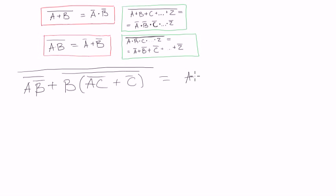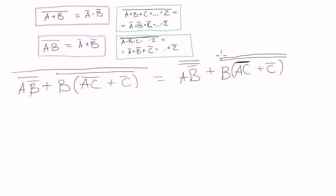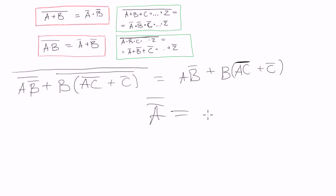We write A·B negated, and it is negated, and then we negate it again. Plus B·A negated - sorry, negated all of these two - plus C negated, all negated. This is the natural negation that was in this part, and then negate again - this negation is from De Morgan's theorem. As you know, double negation of the same thing gives the original thing, so we can erase this negation because it's a double negation.